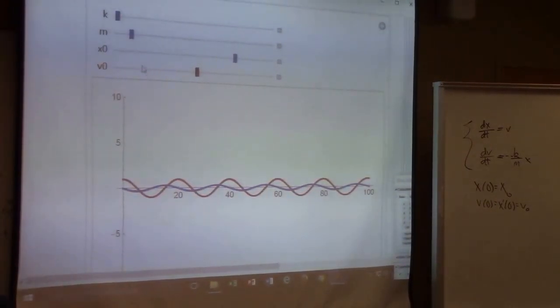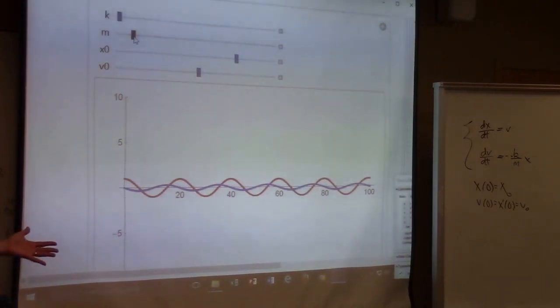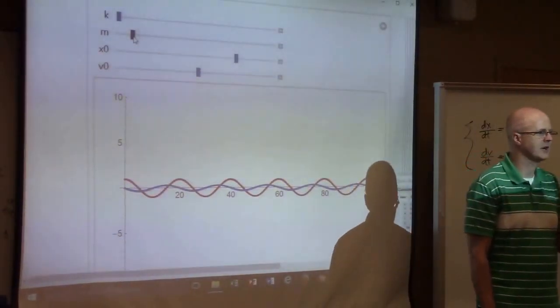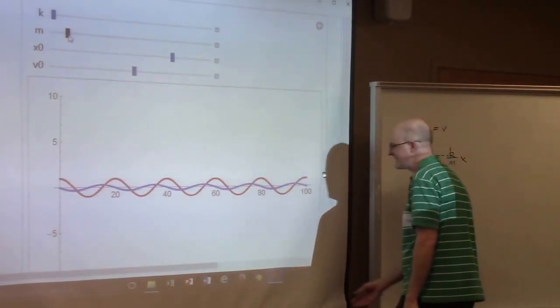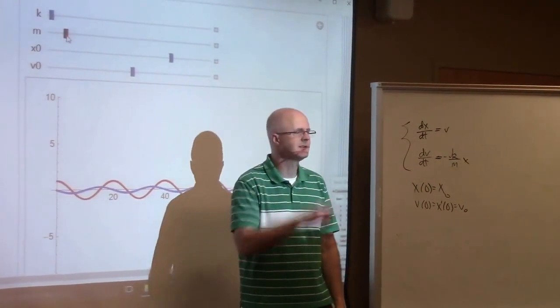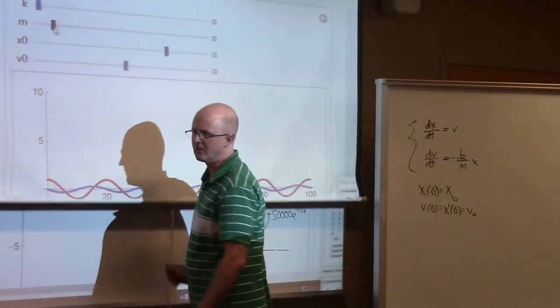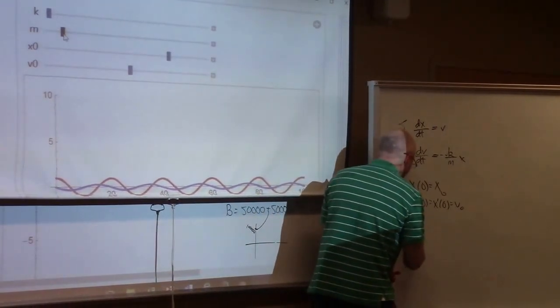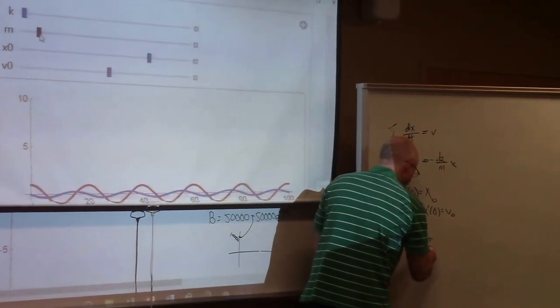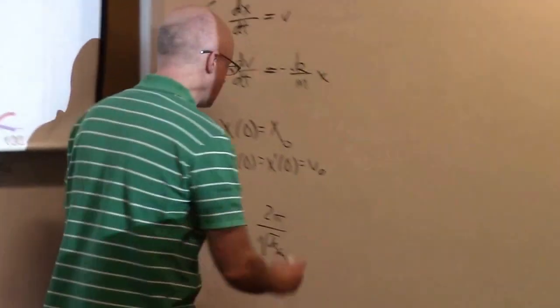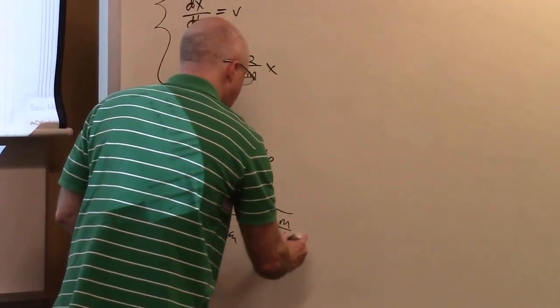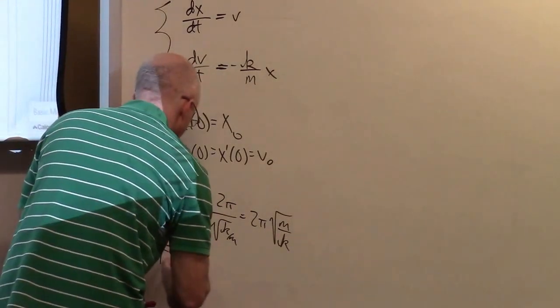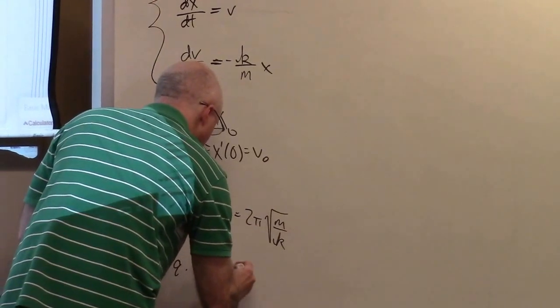But if I change M and K, these graphs will change. I forgot what we found last time. The solution to that second order equation involved cosine and sine. And the input of the cosine and sine involved square root of K over M times T. The period of the motion is 2 pi over square root of K over M, which is the same as 2 pi times square root of M over K. And the frequency is the reciprocal of that: 1 over 2 pi times square root of K over M.